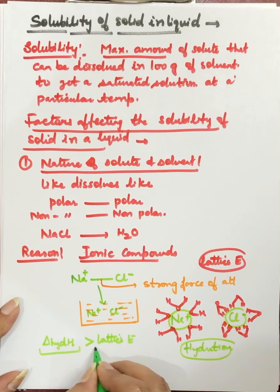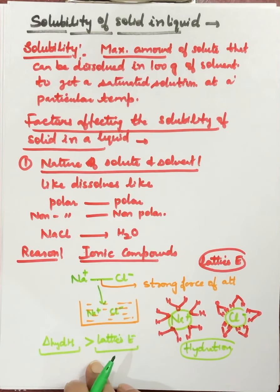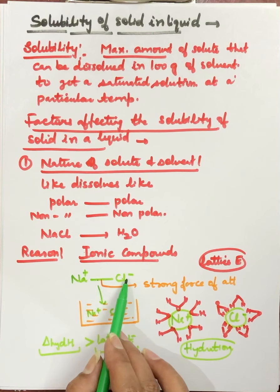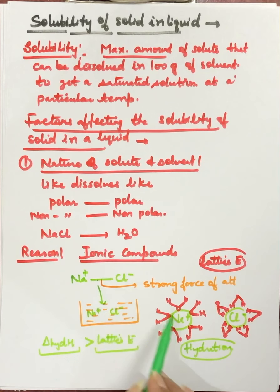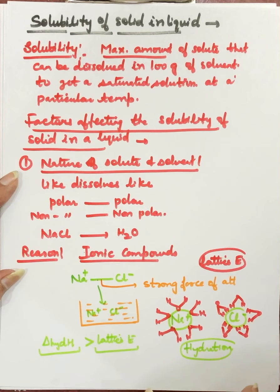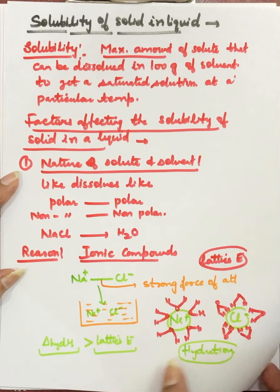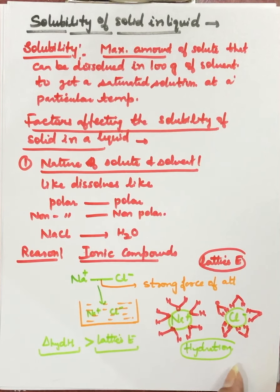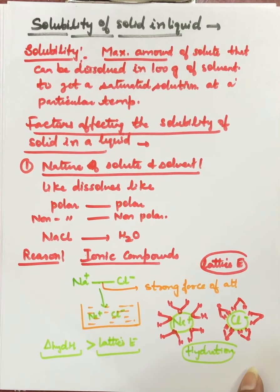A compound is soluble in water only if hydration enthalpy is more than lattice enthalpy. This depends on the strength of the ionic bond and also the size of the ions, which determines which compound is more or less soluble. This is the first factor — nature of solute and solvent.